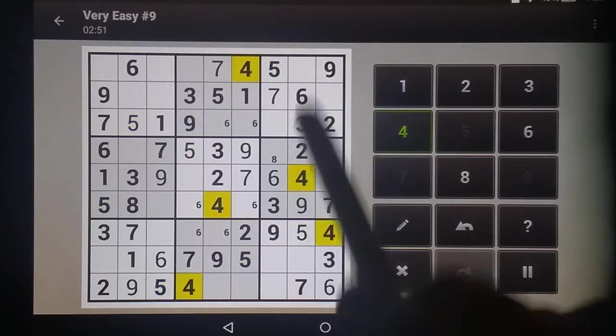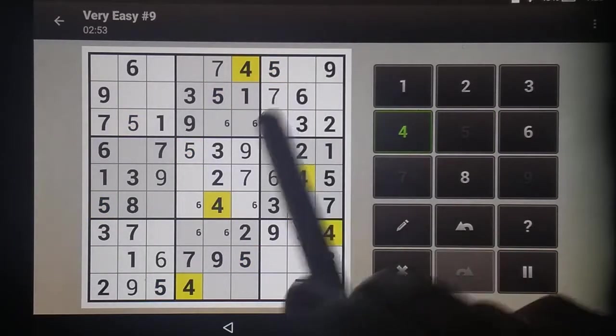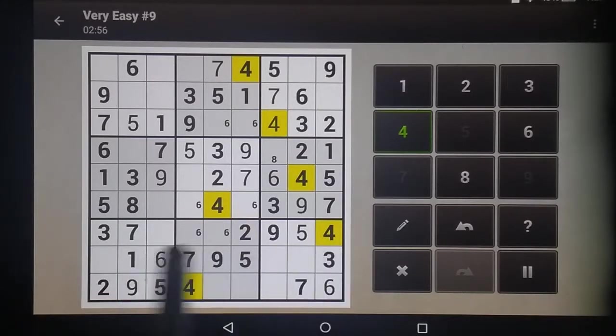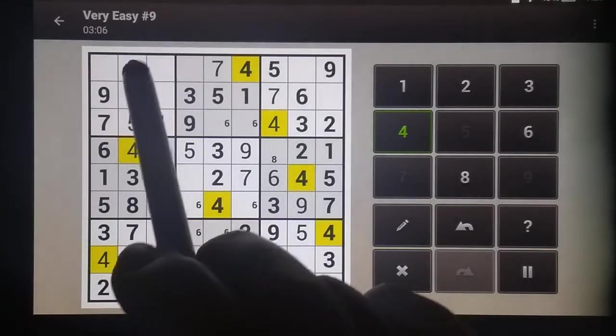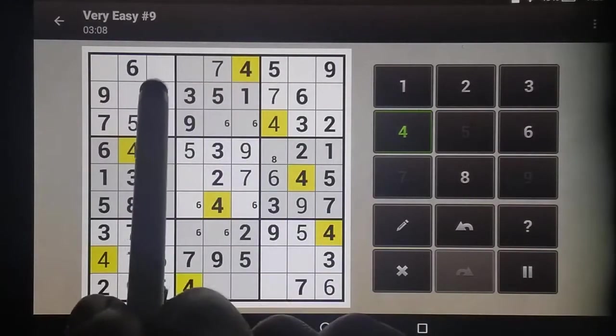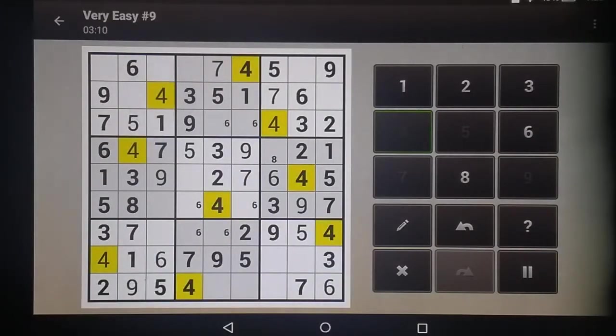And the 4s. Both of those columns are wiped out. There's our 4. This one eliminates that, meaning it has to be there. This one eliminates that, so this one has to be there. These 2 eliminate both of those columns. This one eliminates that row, so there's the 4 there.